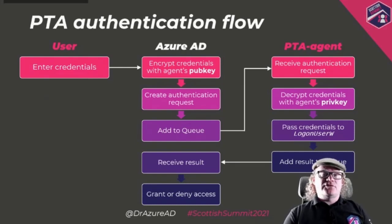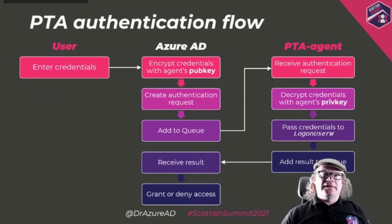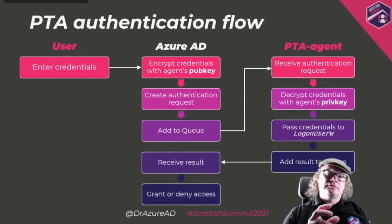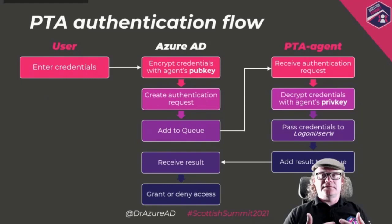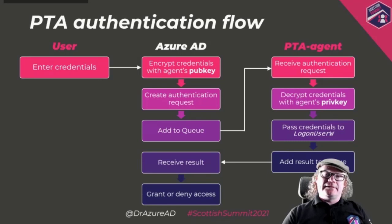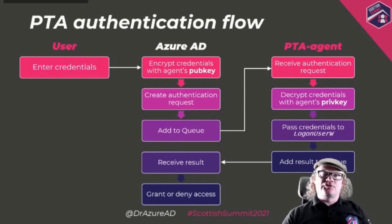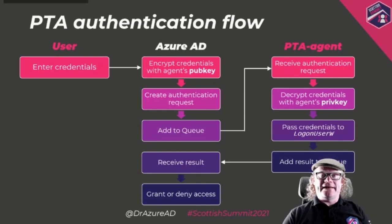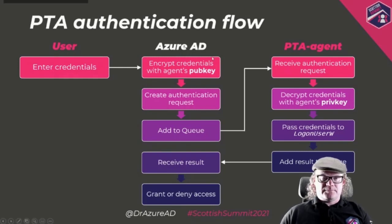Here's how the authentication flow works. The user enters credentials in the Azure AD or Office 365 login screen. Azure AD encrypts those credentials using the PTA agent's public key, creates a request, and adds it to the queue. The PTA agent is listening on that queue — whenever there's a request it uses its private key to decrypt the credentials, passes them to the LogonUserW function, tries to log in as that user, and sends the result back to the queue. Azure AD sees that result and grants or denies access.